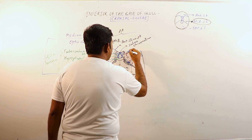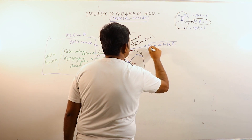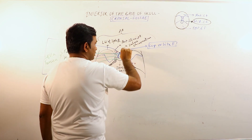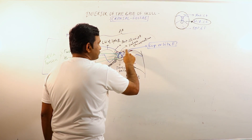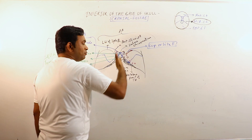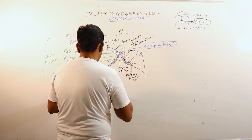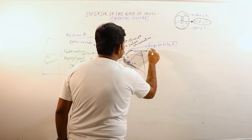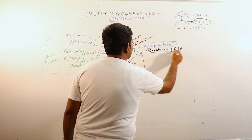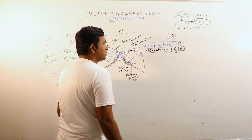The lateral area contains the superior orbital fissure. The superior orbital fissure is bounded superiorly by the lesser wings of the sphenoid, laterally by the greater wing of the sphenoid, and medially by the body of the sphenoid.